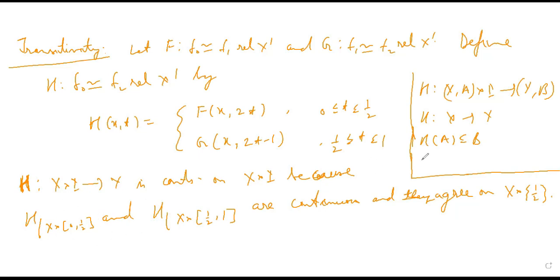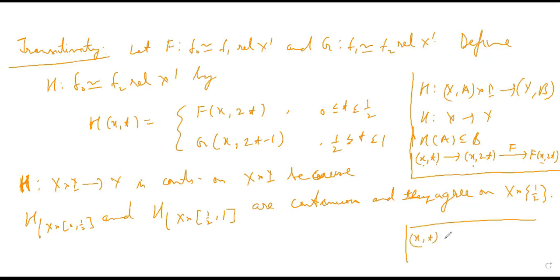Why is each restriction continuous? The first piece is a composition: (x, t) maps to (x, 2t), and then to F(x, 2t). Since F is continuous and the reparametrization is continuous, the composition is continuous. Similarly, the second piece is the composition: (x, t) maps to (x, 2t − 1), and then to G(x, 2t − 1). Since G is continuous and this map is continuous, the composition is continuous.